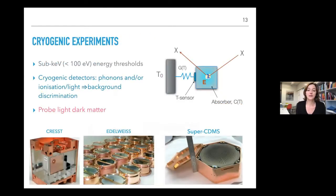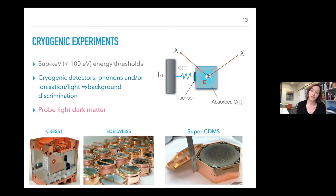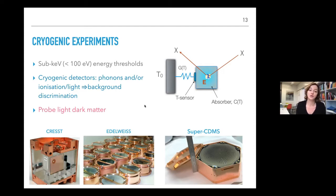Cryogenic experiments are phonon-based detectors where a particle interaction in an absorber coupled to a heat bath produces fast phonons. These can be detected directly as in SuperCDMS or EDELWEISS, or after thermalization. If light sensors as in CREST or charge sensors as in EDELWEISS and SuperCDMS are also used, the ratio of phonons to ionization or ionization to light allows rejection of a large part of the background.